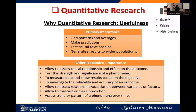Additional importance: it allows us to assess causal relationships and effects on the outcome variable, and to test the strength and significance of a phenomenon — for example, how significantly does blood sugar impact blood pressure, or how significantly does physical activity frequency impact BMI leading to obesity. It also allows measuring data and showing results objectively, and investigating reliability and accuracy of the outcome using tools like R-squared from regression.